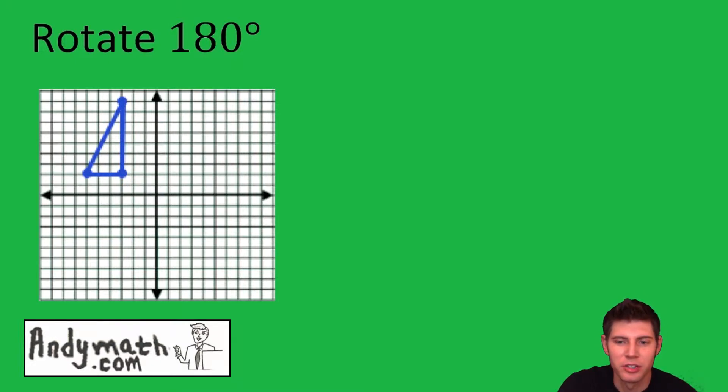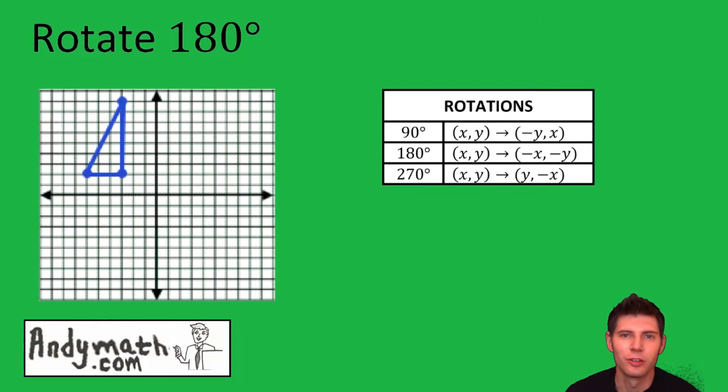So the easiest way to do this is probably to use the notes, and these are the notes for rotations. Since it's 180 degrees, we're going to be interested in this one right here. So it's going to be (x, y) maps to (-x, -y).